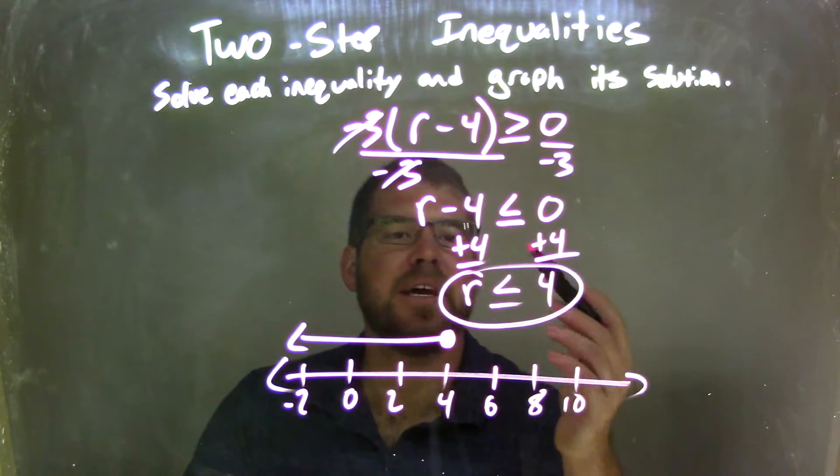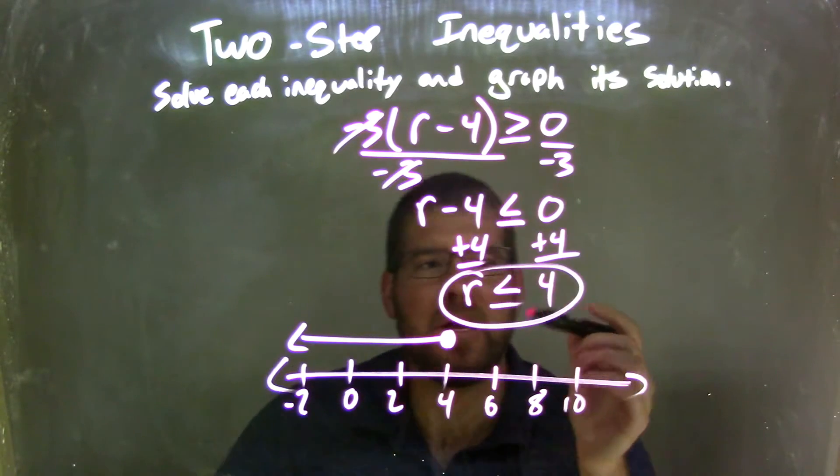I add 4 to both sides, giving me r by itself. So r is less than or equal to positive 4.